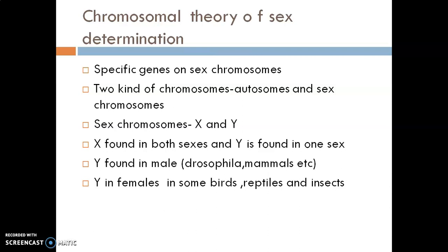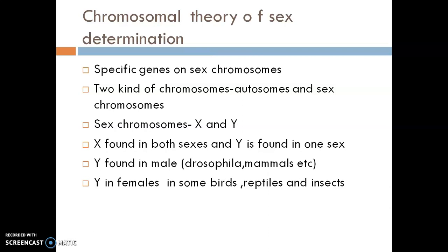There are two kinds of sex chromosomes: X and Y. The X chromosome is found in both sexes, while Y is found only in one sex. In mammals and Drosophila, the Y chromosome is found in males; in reptiles and birds, it is found in females. The male and female of a species differ in their sex chromosome complement — one will have a pair of X chromosomes (XX condition) and the other will have only one X. In most cases, the female is XX; in reptiles and birds, the male is XX.